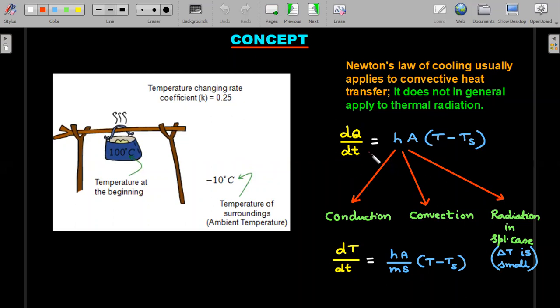The actual Newton's law comes from the dQ/dt law, which is equal to h times A into (T_a - T_s), where T_s is the temperature of the surrounding, A is the area of the body, and h is the heat coefficient. This heat coefficient could be associated in general to all three forms of heat transfer—conduction, convection, and radiation—but radiation is actually not in general; it is only considered for a special case of delta T being small.